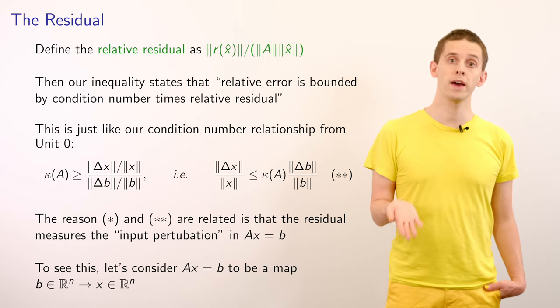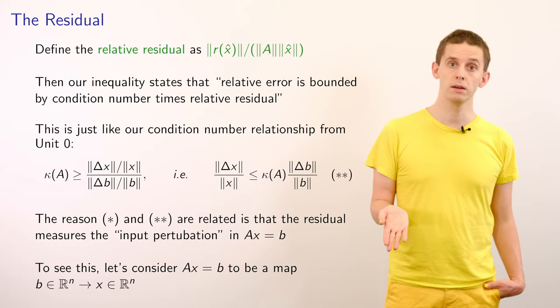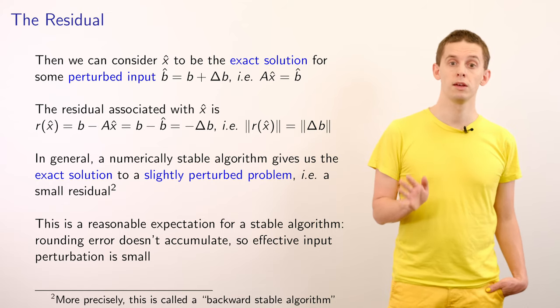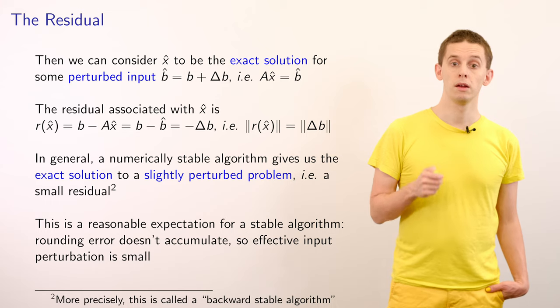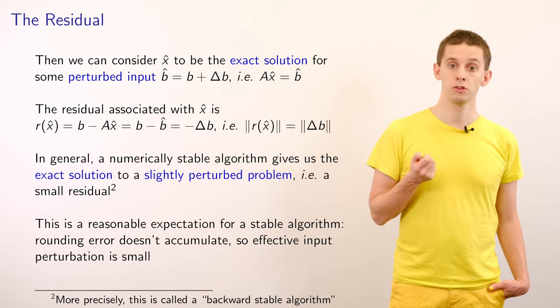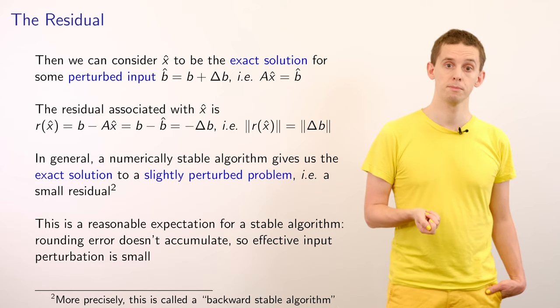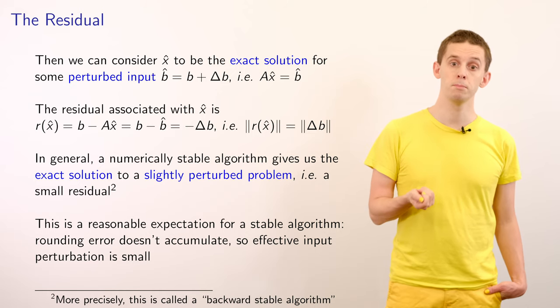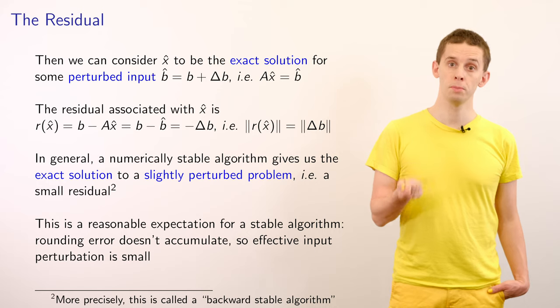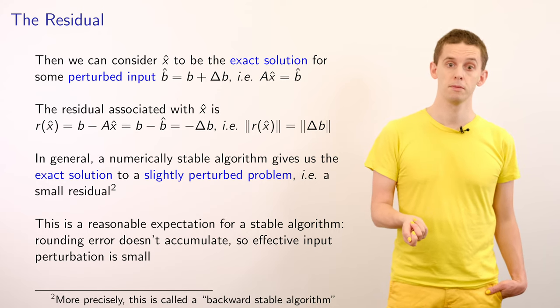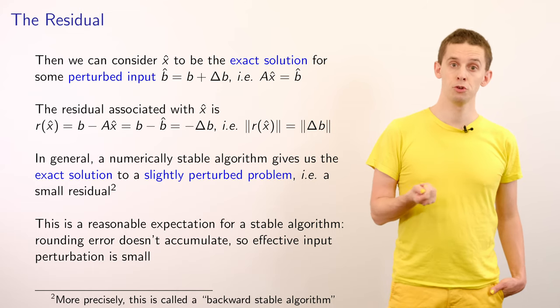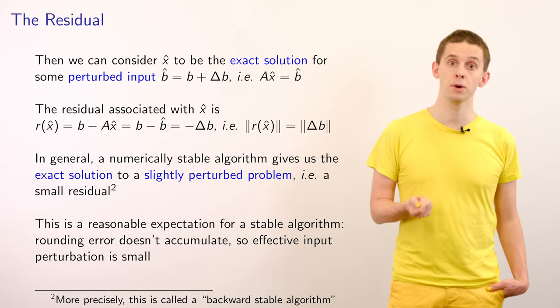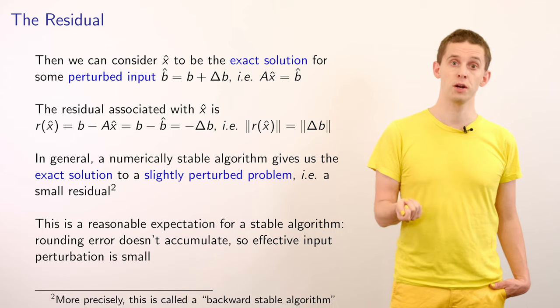To see this, let's think of Ax = b to be a map from a vector b to a vector x. And we can therefore consider x̂ to be the exact solution for some perturbed input b̂ = b + Δb. So therefore A(x̂) = b̂. So the residual associated with x̂ is equal to r(x̂) and that's equal to b minus A times x̂ and that's equal to b minus b̂ which is equal to minus Δb. And therefore the norm of r(x̂) is just equal to the norm of Δb. And that allows us to make this direct connection between our two expressions involving the condition number.